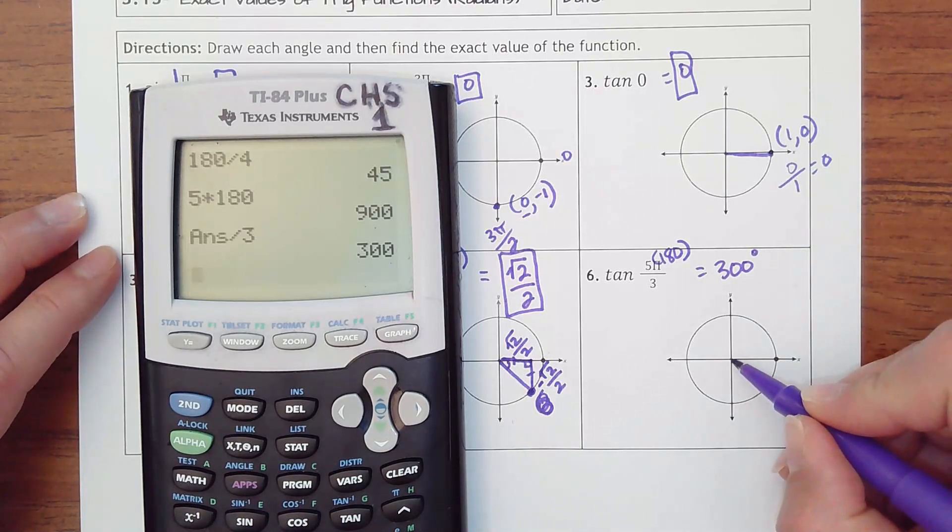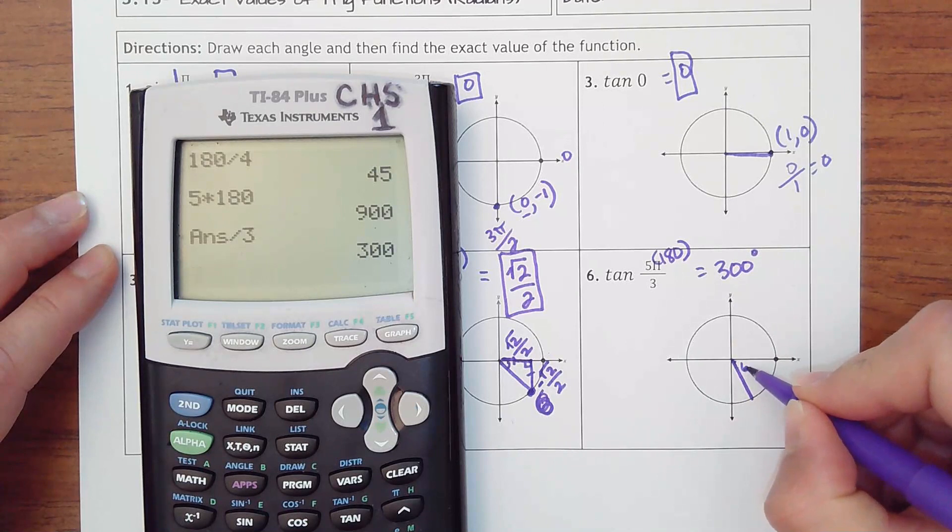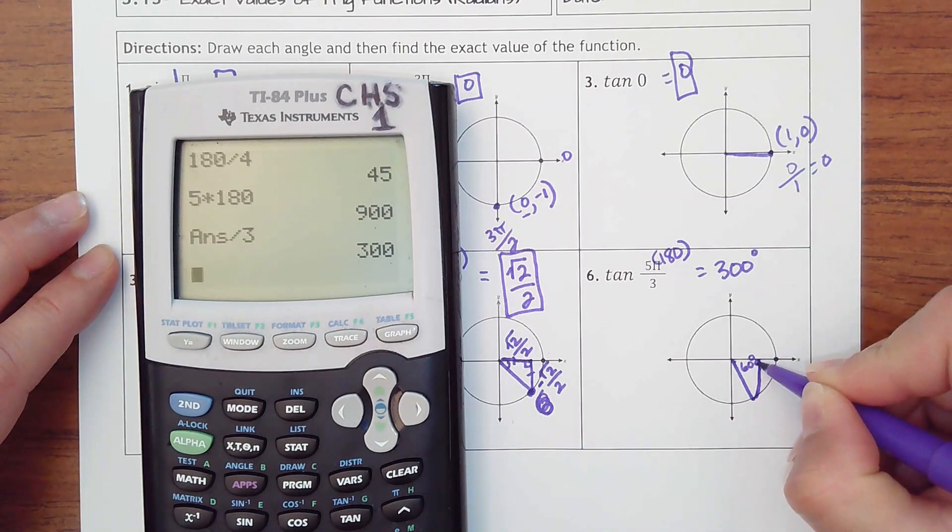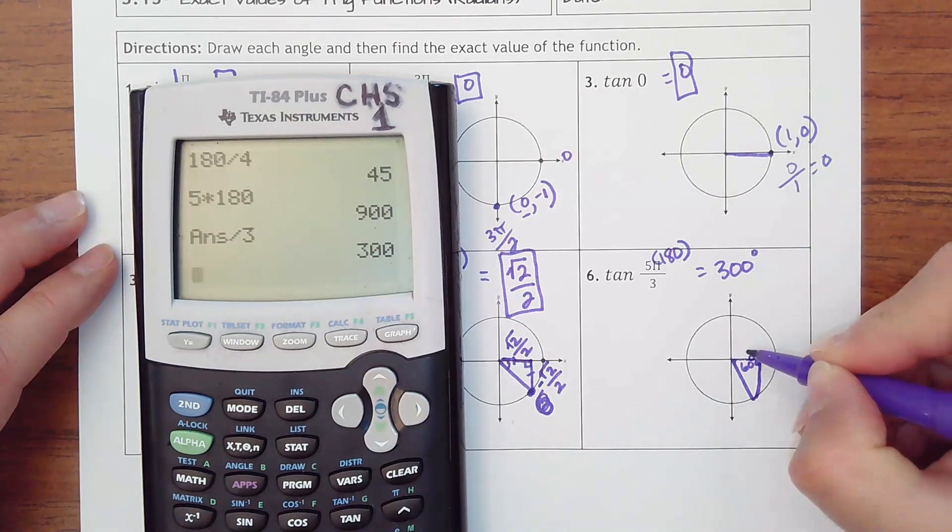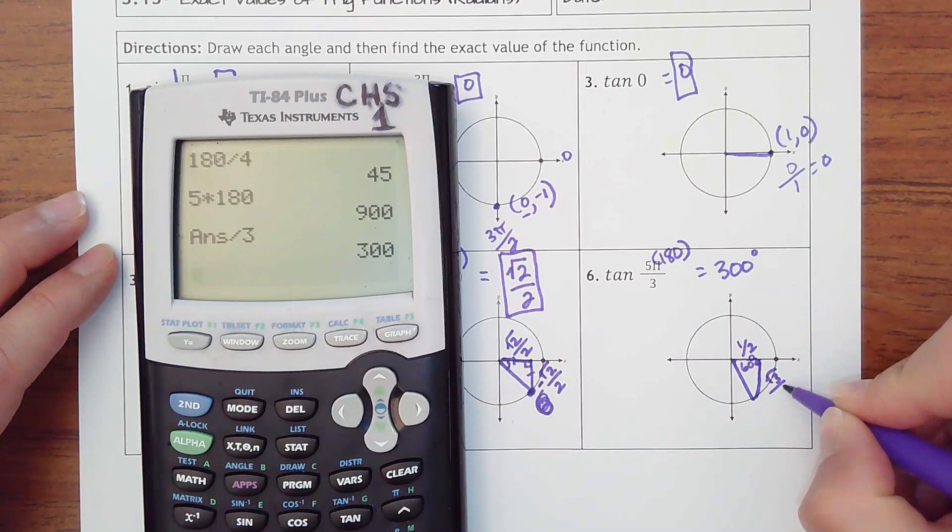300 degrees would be here. That's our 60 degree reference angle that we're creating. Okay. And then, so this would be our shorter leg, 1 half. Longer leg is square root of 3 over 2.